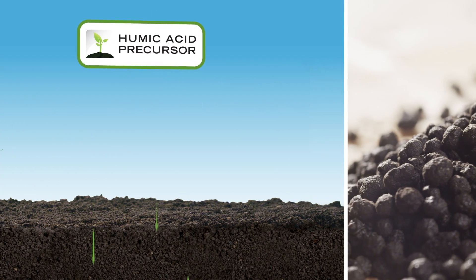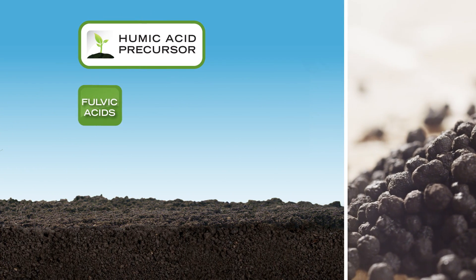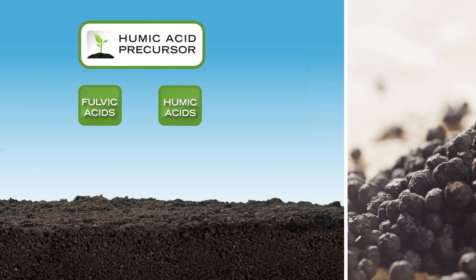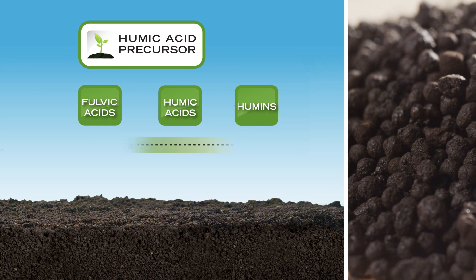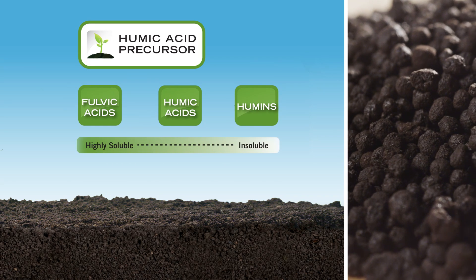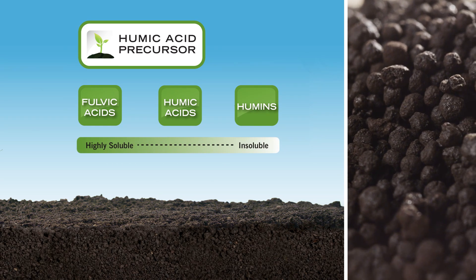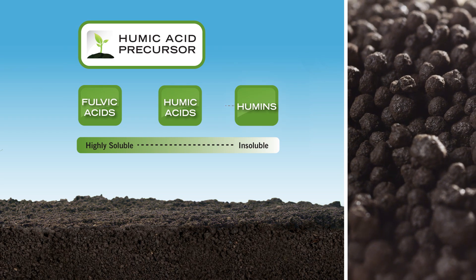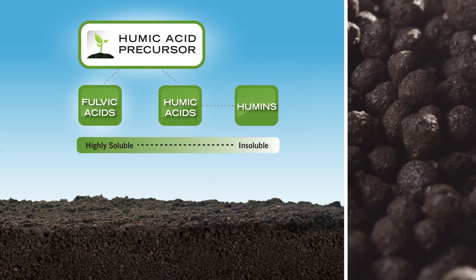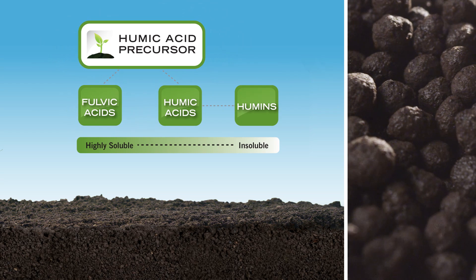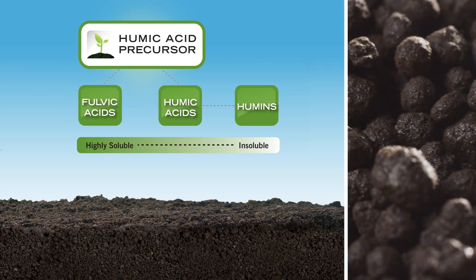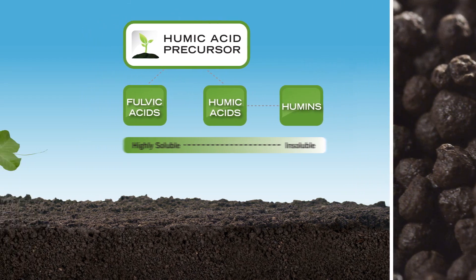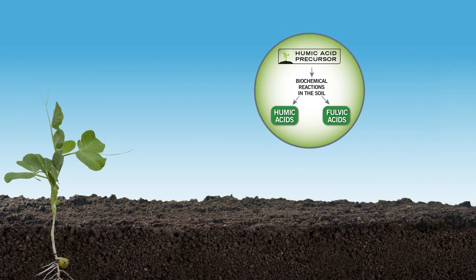Humic DG is comprised of four biological components. These components range from very soluble to completely insoluble in-soil media and work together to provide a broad range of benefits. The humic acid precursor portion of Humic DG provides a plant-based organic carbon source.